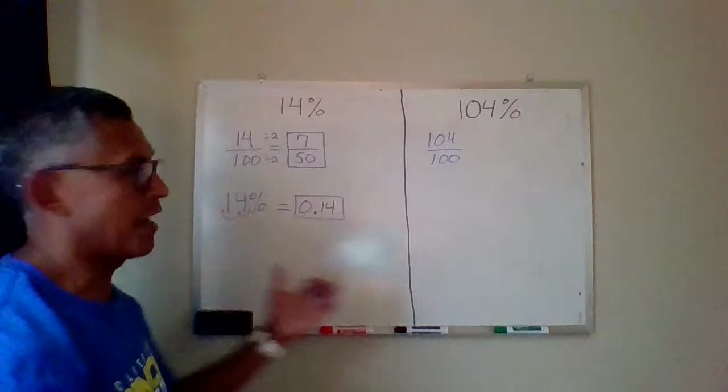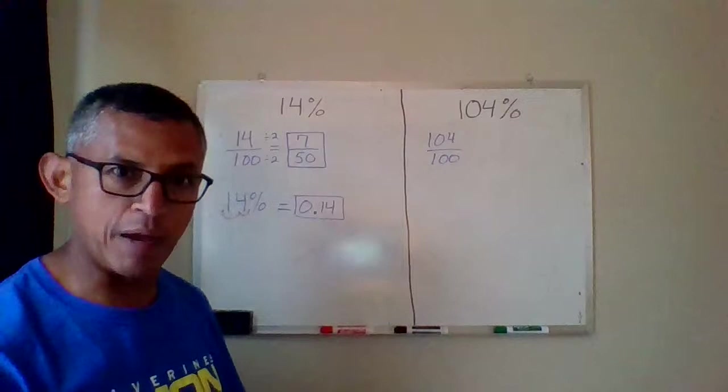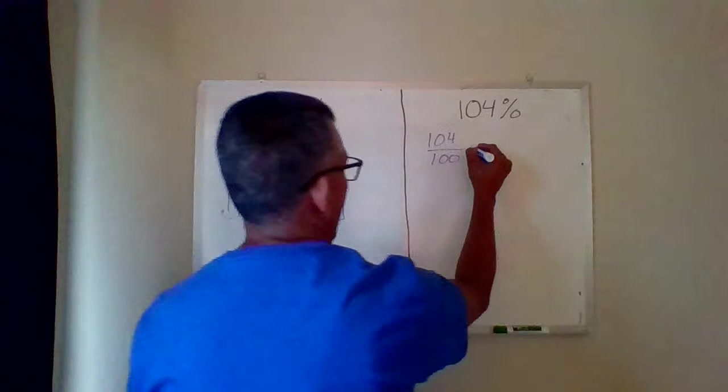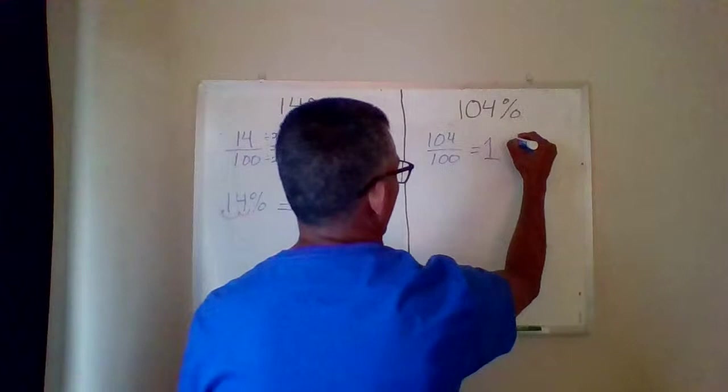Now, here I have a couple of choices. I can first make it a mixed number, which we learned about before, or I can go ahead and simplify it. I think where I'm going to start is I'm going to change this into a mixed number. So as a mixed number, this would be one whole because 100 will go into 104 one time with four left over, over 100.